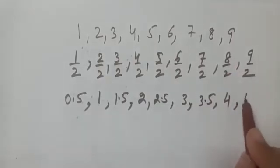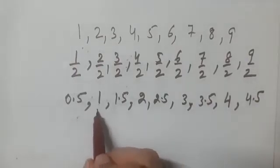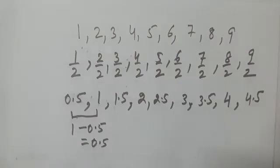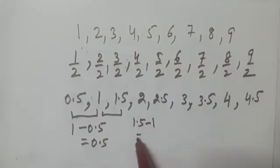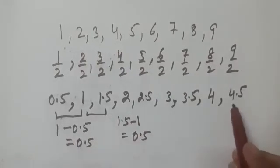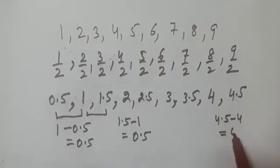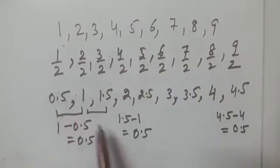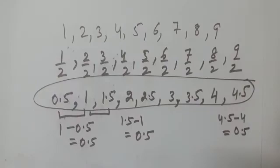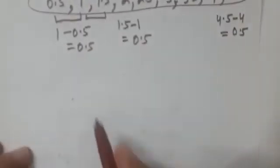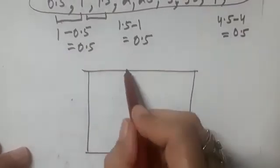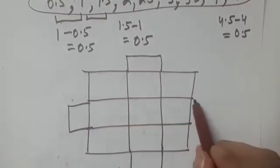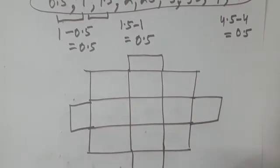Six-halves is 3, seven-halves is 3.5, eight-halves is 4, and nine-halves is 4.5. Here also you will observe that if you subtract 0.5 from 1 you get 0.5, similarly 1.5 minus 1 is 0.5, and so on — four-point-five minus four gives 0.5. So there is a common difference between consecutive terms. We will now make a magic square using these nine terms and find the magic constant. First we make the nine boxes and extend the middle boxes, then put the numbers in the diagonals.